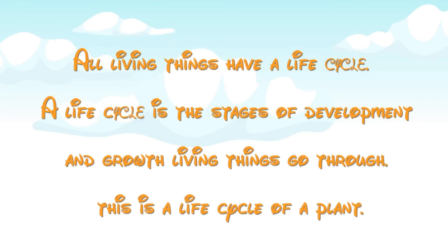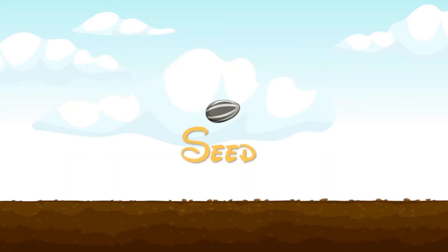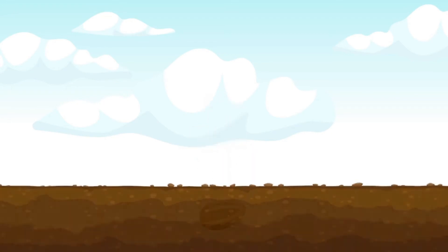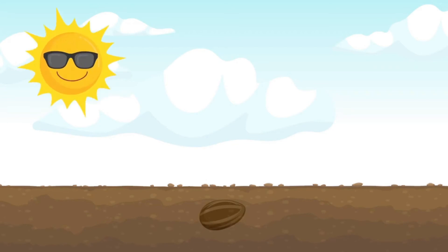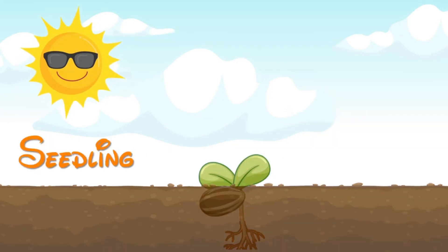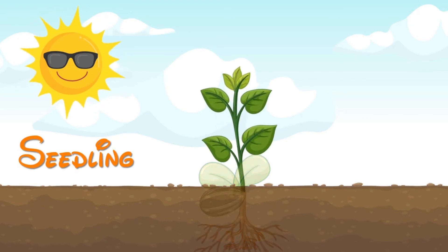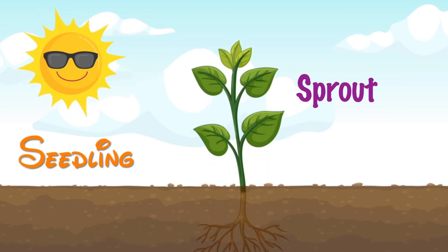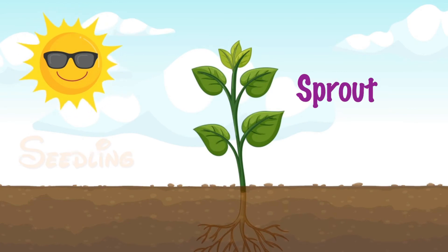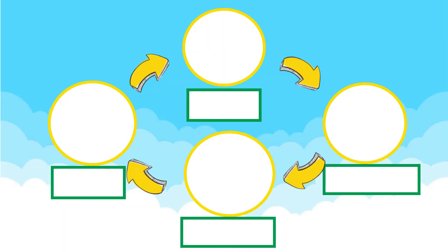All living things have a life circle. A life circle is the stage of development and growth of living things. This is a life circle of a plant. This is a life circle of one child. Now, let's discuss together what we have learnt based on the video.